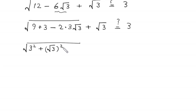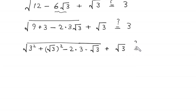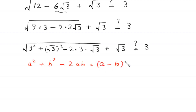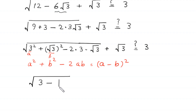By using the algebraic identity a squared plus b squared minus 2ab equals (a minus b) squared, where a equals 3 and b equals root 3, the expression inside the square root becomes (3 minus root 3) squared. So we write square root of (3 minus root 3) squared, plus root 3 — is it equal to 3?